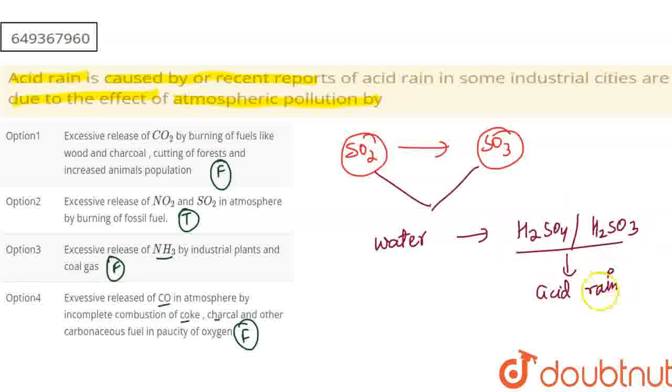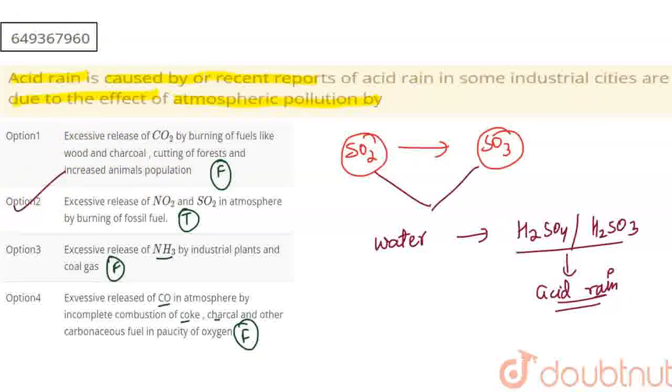So this is acid rain, and acid rain is very harmful for human beings and can cause damage. So option B is correct. Thank you.